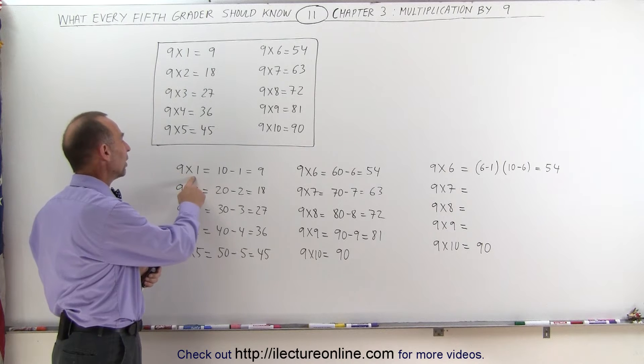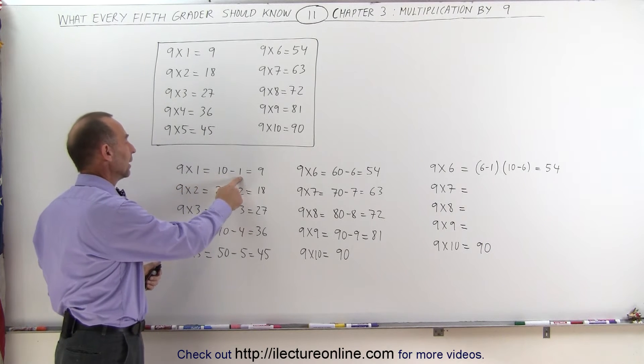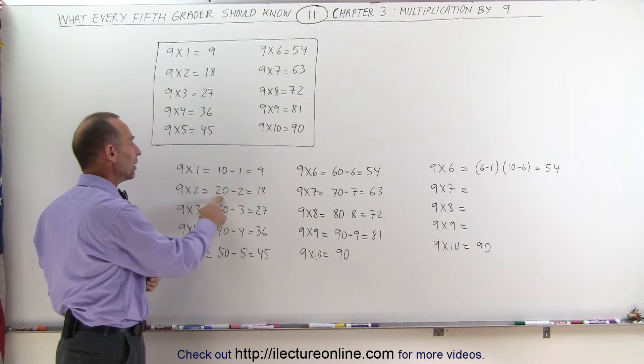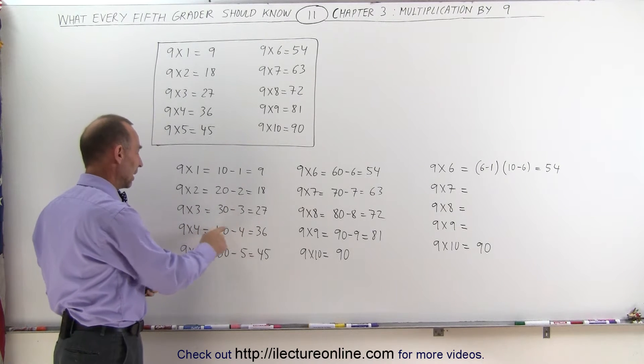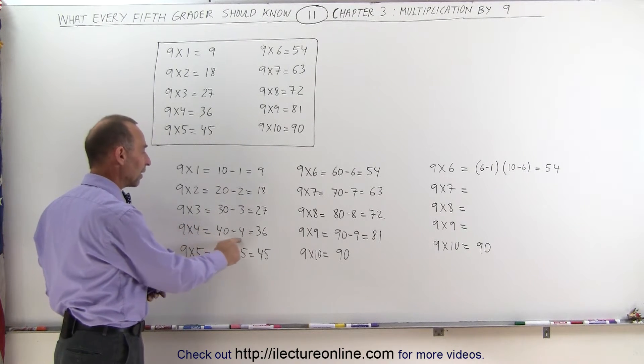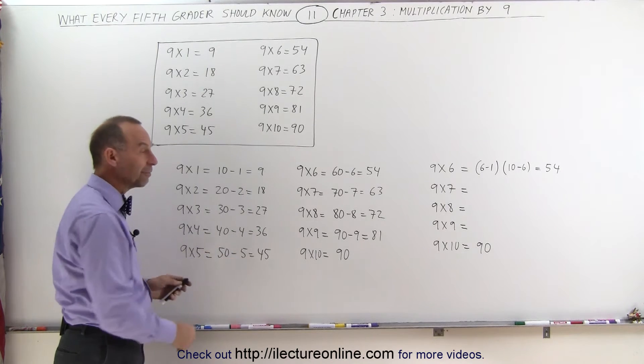Notice that I looked at 9 times 1 as 10 minus 1, and 9 times 2 as 20 minus 2, and 9 times 3 as 30 minus 3, and 9 times 4 as 40 minus 4, and 9 times 5 is 50 minus 5.